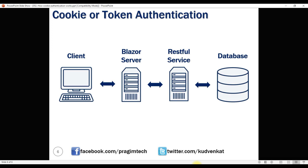If you want to independently scale up and down these two applications, you may have to deploy them on different servers. If they are deployed on different servers, we cannot use the same cookie authentication to authenticate both the Blazor Web application and Web API, because a cookie created by one domain cannot be accessed by another domain. Although it is possible to share cookies between subdomains, it's standard practice to use cookie-based authentication for web applications and token-based authentication for web APIs. In our upcoming videos, we'll implement cookie authentication to protect our Blazor Web application and token authentication to protect our Web API.